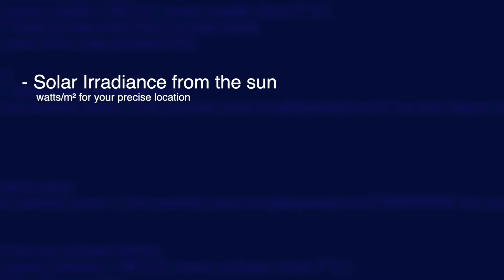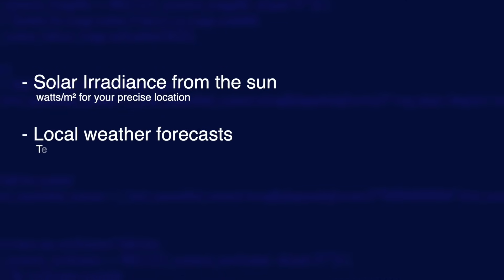This sort of automation relies on having a very accurate forecast. If the forecast predicted more solar energy than you actually got, your batteries might end up without enough energy to see you through the day, forcing your home to draw from the grid at expensive peak times. Solar PV forecasting is a very complicated thing to do. It has to take solar irradiance data for your precise location — that is the power in watts from the sun per square metre.